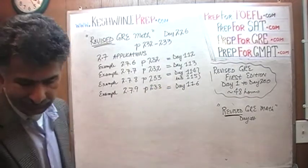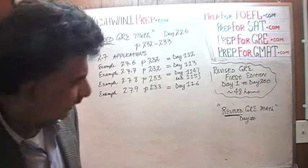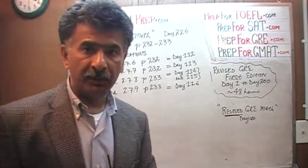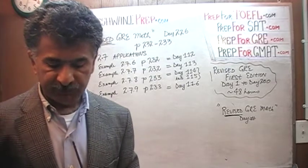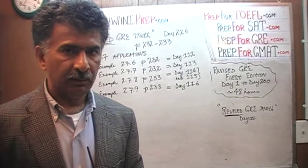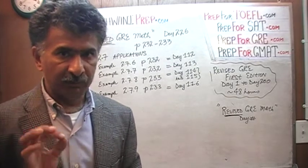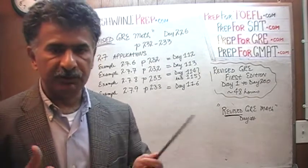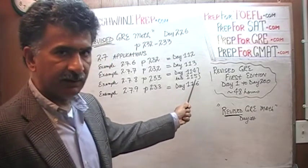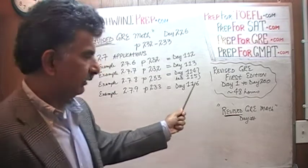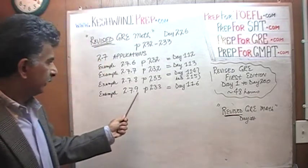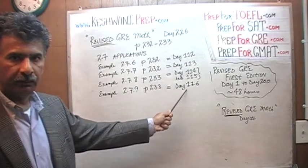Problem 2.7.8, on the top of page 233, deals with the notion of compound interest. Instead of doing the example in the book, which is a more complicated example, I started with a simpler version — an example of my own, not in the book — which is why you see two days here: day 114 and 115. Day 115 is the day I did the actual problem from the book. Example 2.7.9, you will find it on day number 116.